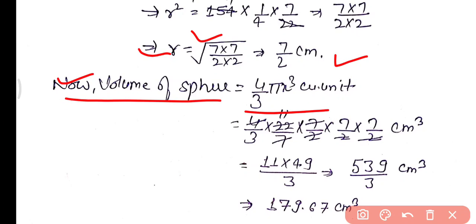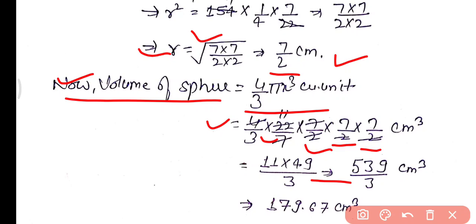Now using r = 7/2 cm to find the volume: volume of sphere = 4/3 π r³ = 4/3 × (22/7) × (7/2)³ = 4/3 × (22/7) × (7/2) × (7/2) × (7/2). After simplifying, we get 179.67 centimeter cube as the volume of the sphere.